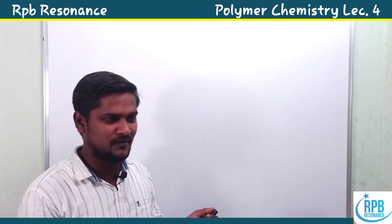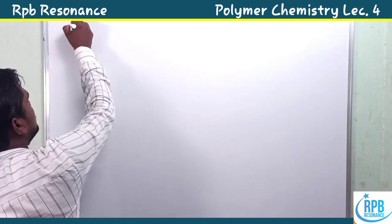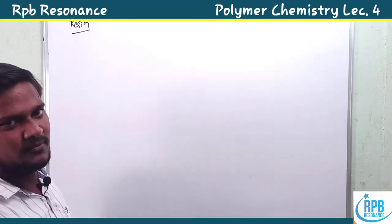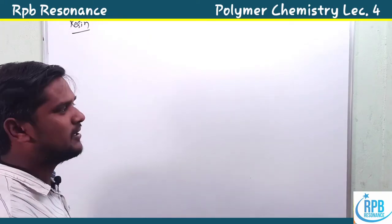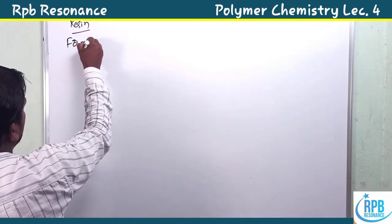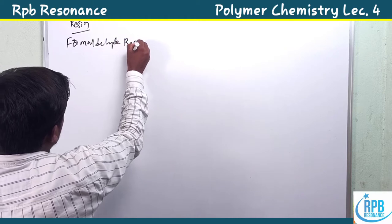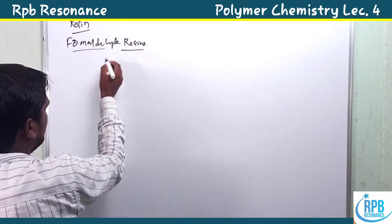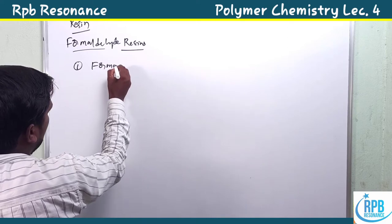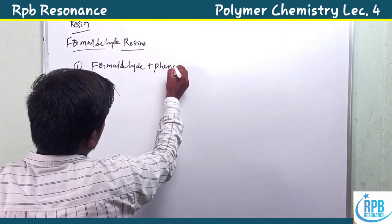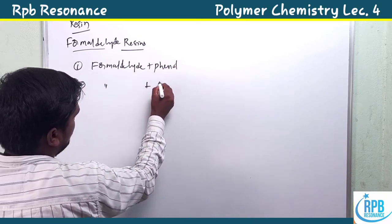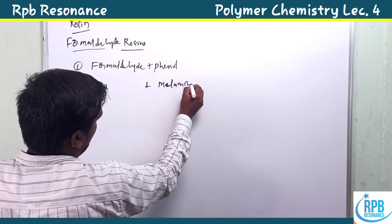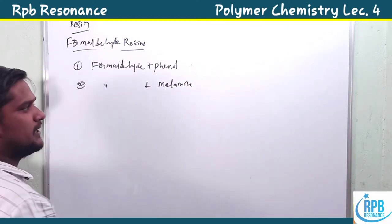Hi everyone, welcome to RPB Resonance Chemistry. Let's continue the lectures on polymer chemistry. Today I'm going to discuss resin polymers. In previous classes, I discussed plastic polymers as well as fiber forms. Now I'm going to deal with resin polymers. Two types of formaldehyde resins are there: formaldehyde with phenol, and formaldehyde with melamine.